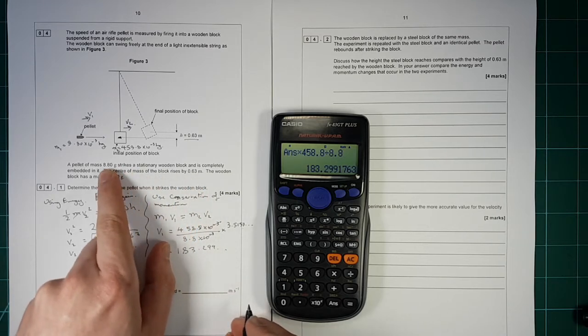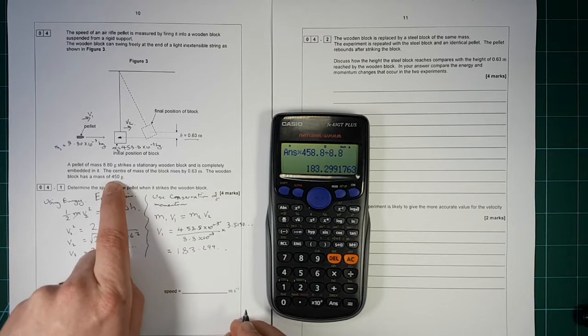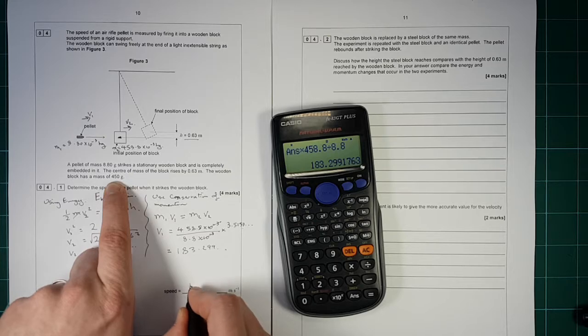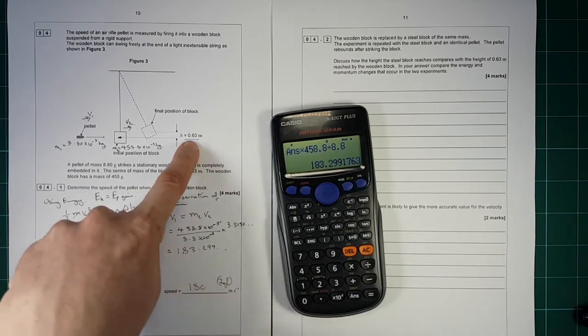What have we got? We've got 3 significant figures there, but we've only got 2 significant figures there. 2 or 3 significant figures there, we don't know. So let's just write it to 2 significant figures. 180, 2 significant figures. Because we're restricted by that one there.